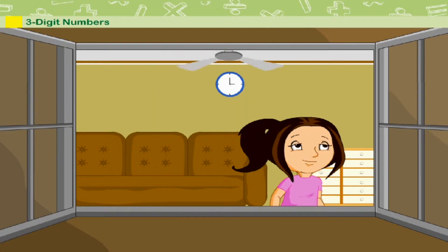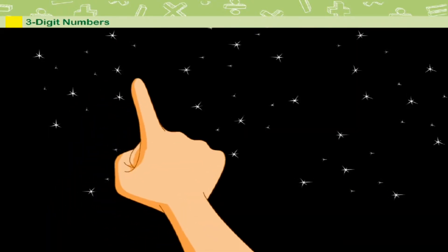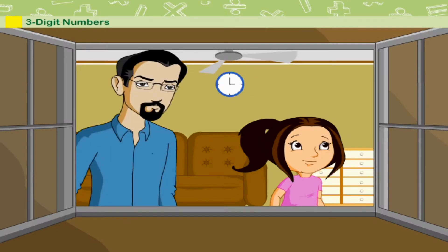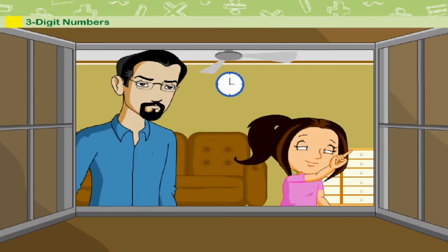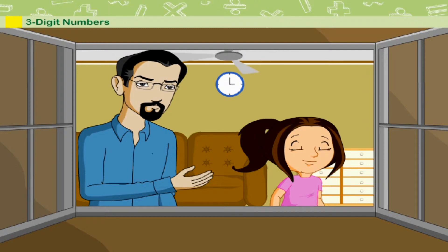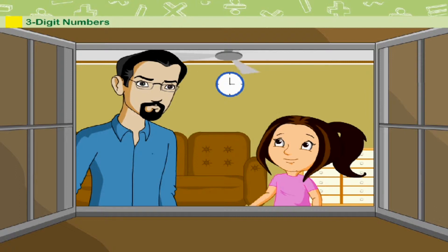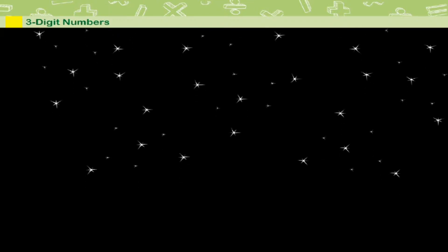Again, he started counting from one. His father was also watching him. He asked him why he was counting again from one. Sheetla replied that he knew counting up to hundred only. Let us help Sheetla to count beyond hundred.